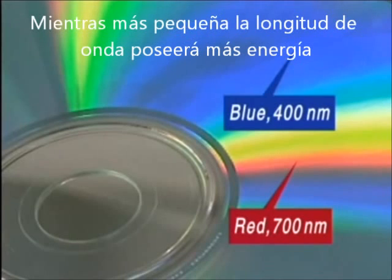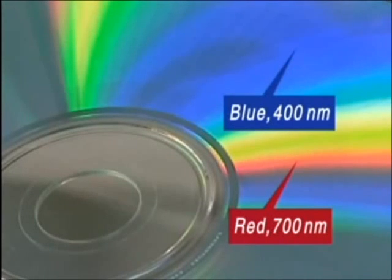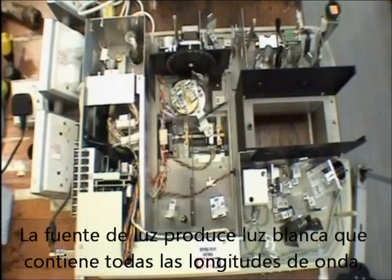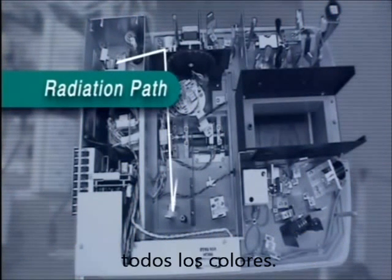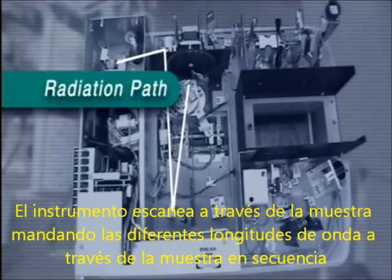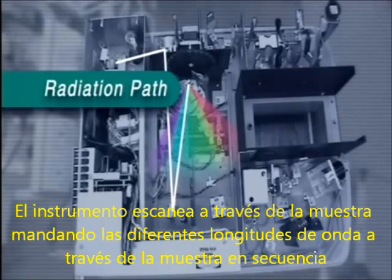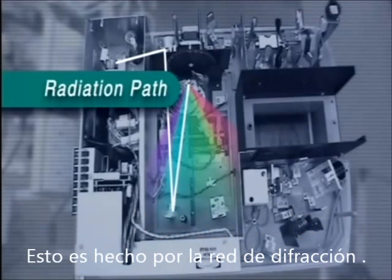Shorter wavelength light has higher energy. The source produces white light that includes all wavelengths, all colours. The instrument scans through the spectrum, sending different wavelengths of light through the sample in sequence. This is done by the grating, which rotates.